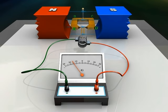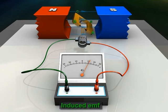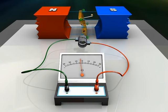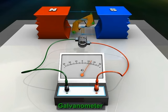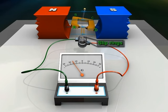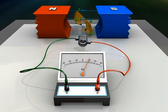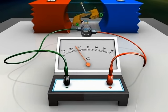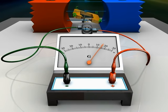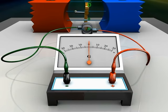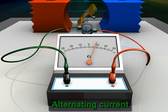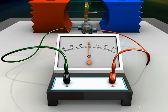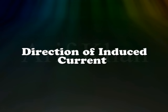As a result, an EMF is induced in the armature. This in turn produces an electric current through the armature, the galvanometer, the slip rings, and the brushes. The galvanometer needle swings between the negative and positive values, meaning an alternating current is flowing through it.